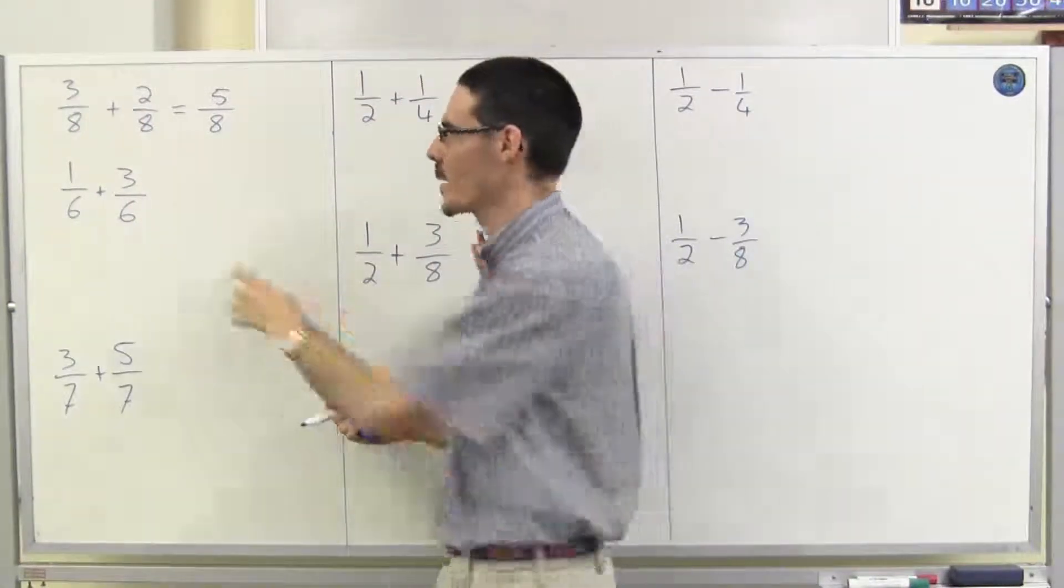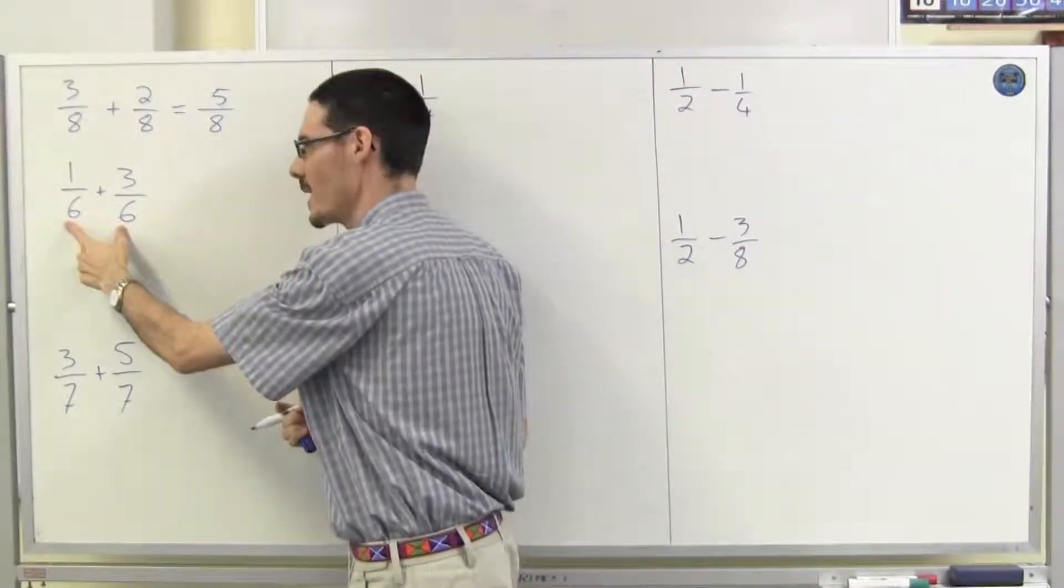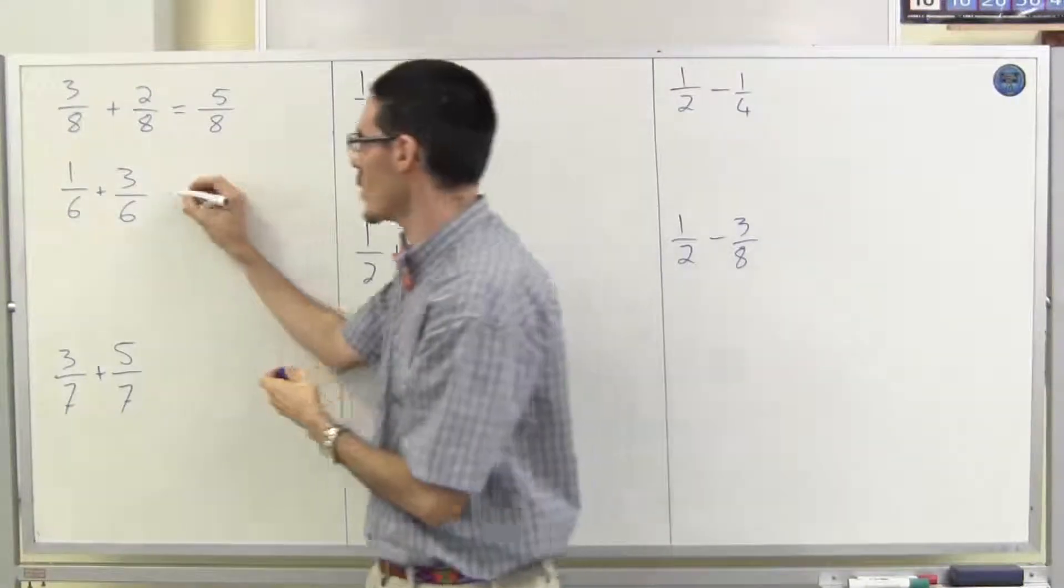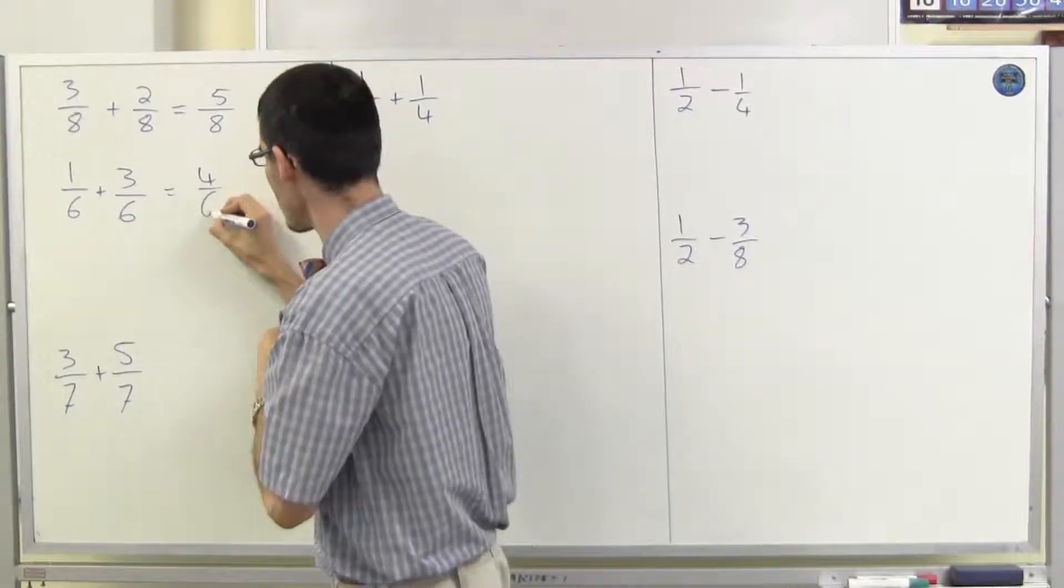The next one's the same. One-sixth plus three-sixths. Again, they already have the same denominator, so all I have to do is add the numerators. One plus three making four-sixths.